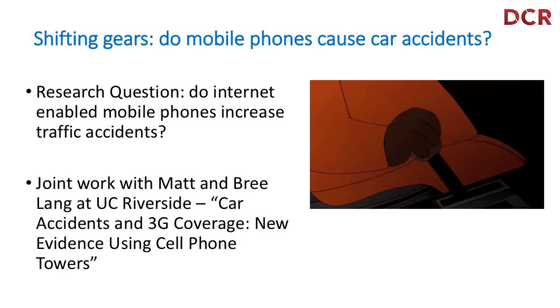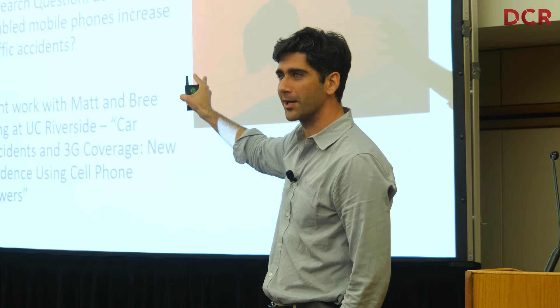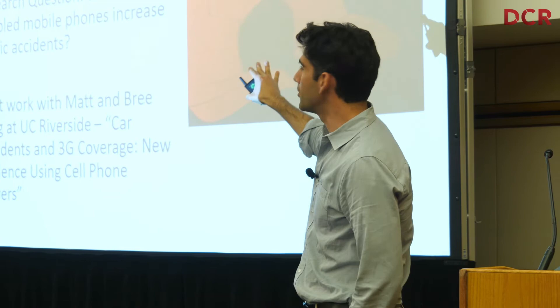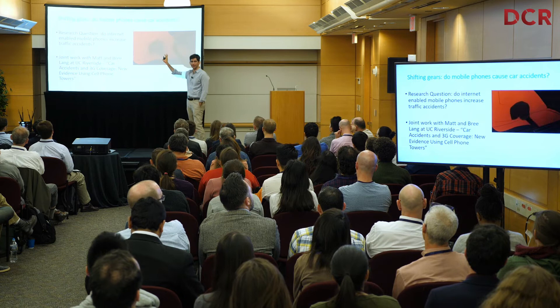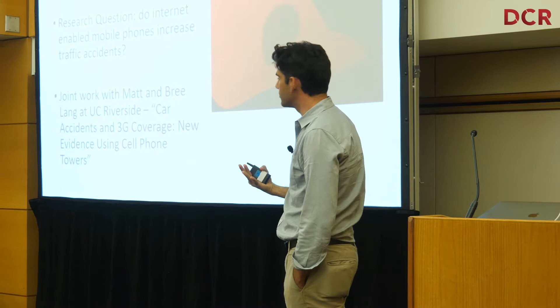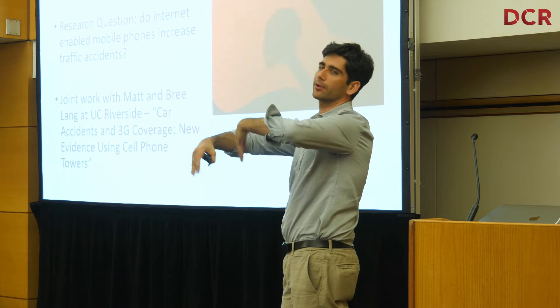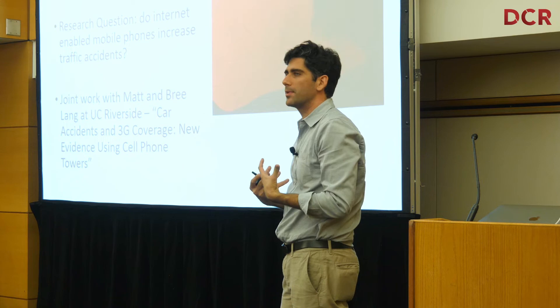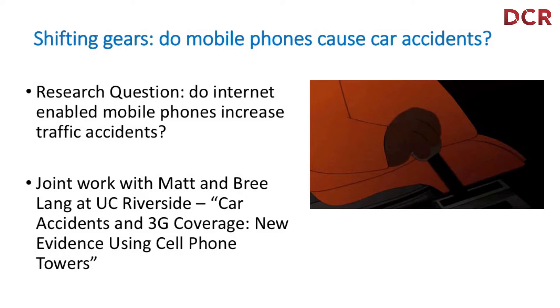Shifting gears, I'm going to talk about some research where we're trying to answer: do internet-enabled mobile phones increase traffic accidents? This is joint work with Matt and Brie Lang at UC Riverside. Our working paper is 'Car Accidents and 3G Coverage: New Evidence Using Cell Phone Towers.' You can think about how we're weaving in those principles — this is something you could implement in maybe the Department of Transportation, and there's nothing we're doing that you couldn't do on your own.